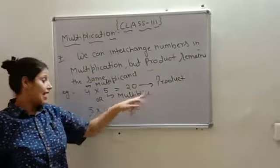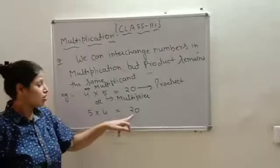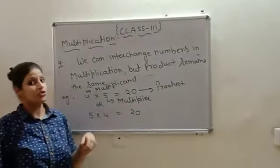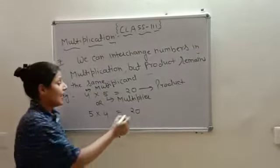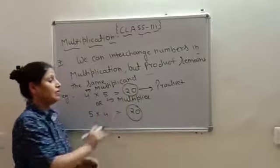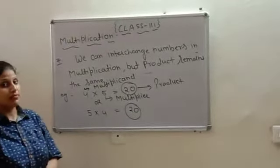And, on the other hand, multiplier multiplied by multiplicand is also product. I mean to say, if you interchange numbers during multiplication, doesn't matter, at last, your product will be same. The answer you will get after multiplication will be same.